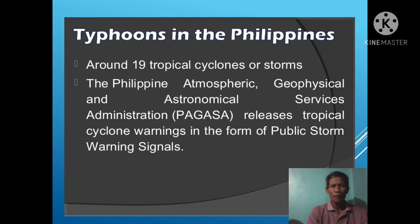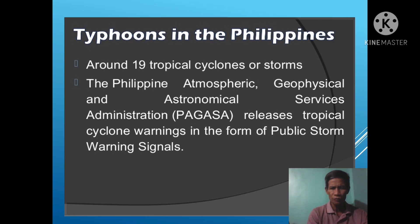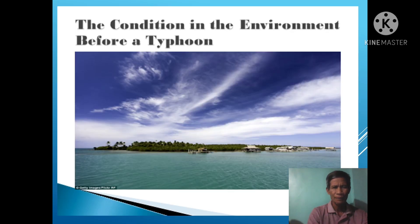Typhoons in the Philippines: around 19 tropical cyclones or storms occur. The Philippine Atmospheric, Physical and Astronomical Services Administration — PAGASA — releases tropical cyclone warnings in the form of public storm warning signals.